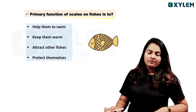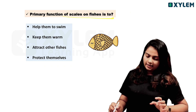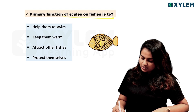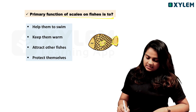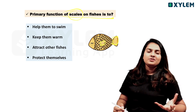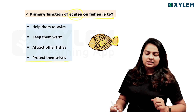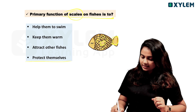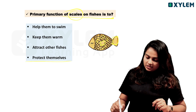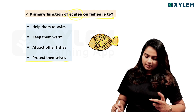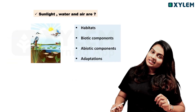Swimming is done by the fins and tail, not by scales. The scales primarily protect the fish. So the correct answer is 'protect themselves.'